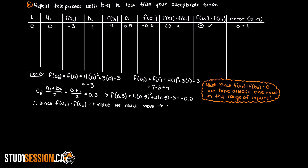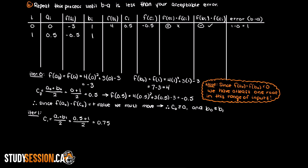Now we just need to keep repeating this process. Since we already know our values at f(a1) and f(b1), we can go straight to step 3 of the bisection method and find our next value of c, then find which direction we need to move in and continue. I recommend you stop the video at this point and try to do a few iterations on your own and see if you get the same results as me.